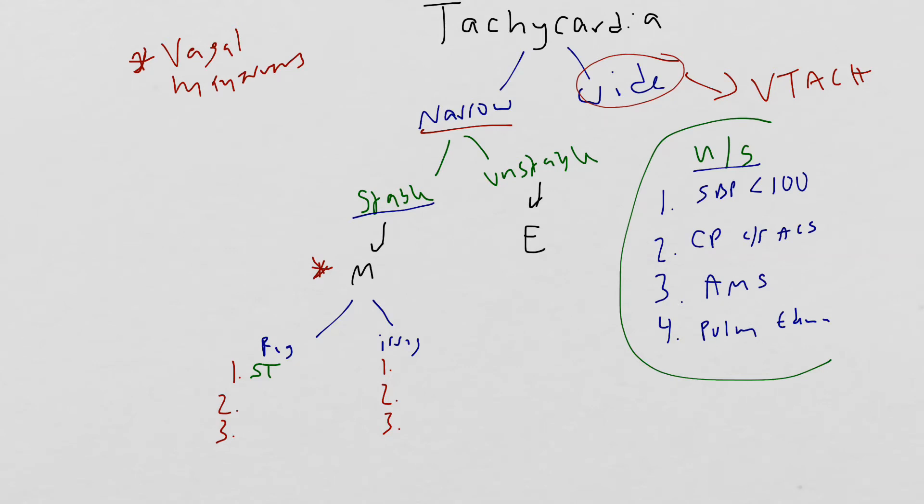The first one you want to remember is sinus tachycardia. The next one that's regular is AVRT or AVNRT, which we sometimes colloquially refer to as SVT. And lastly, atrial flutter with a fixed block, usually a two to one block.